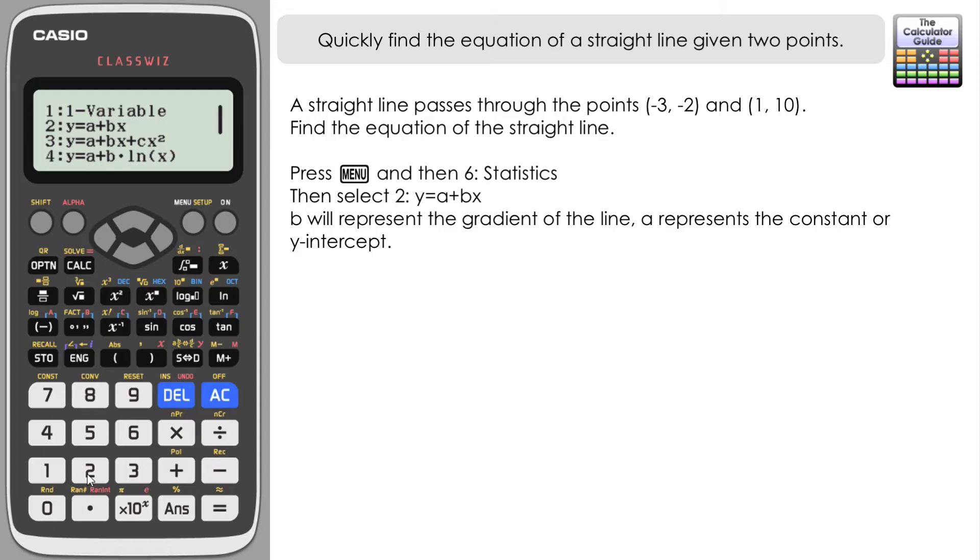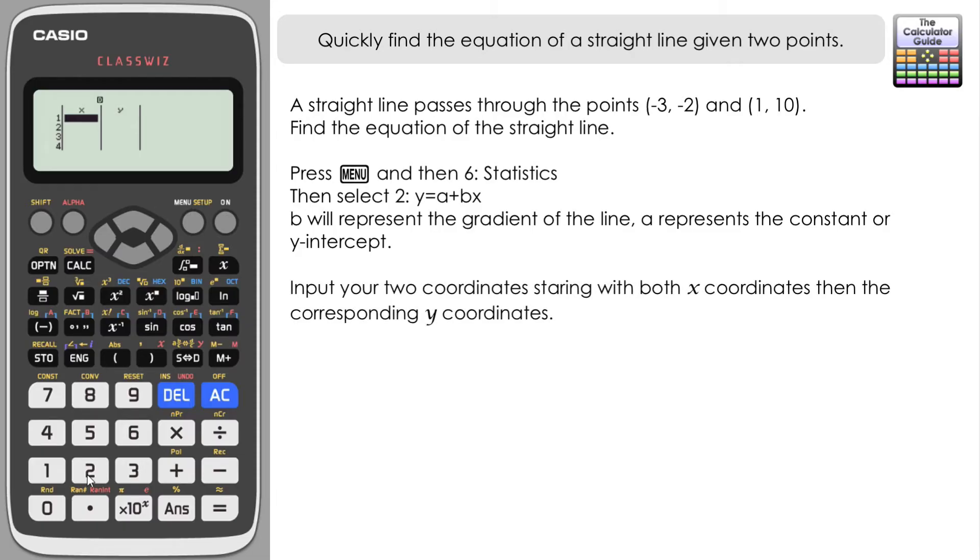So again, once again it is a little bit of a hack, but provided we're okay with that it does still give us the correct results. So if we press 2, then we're presented with two columns: one for our x coordinates and one for our y coordinates.